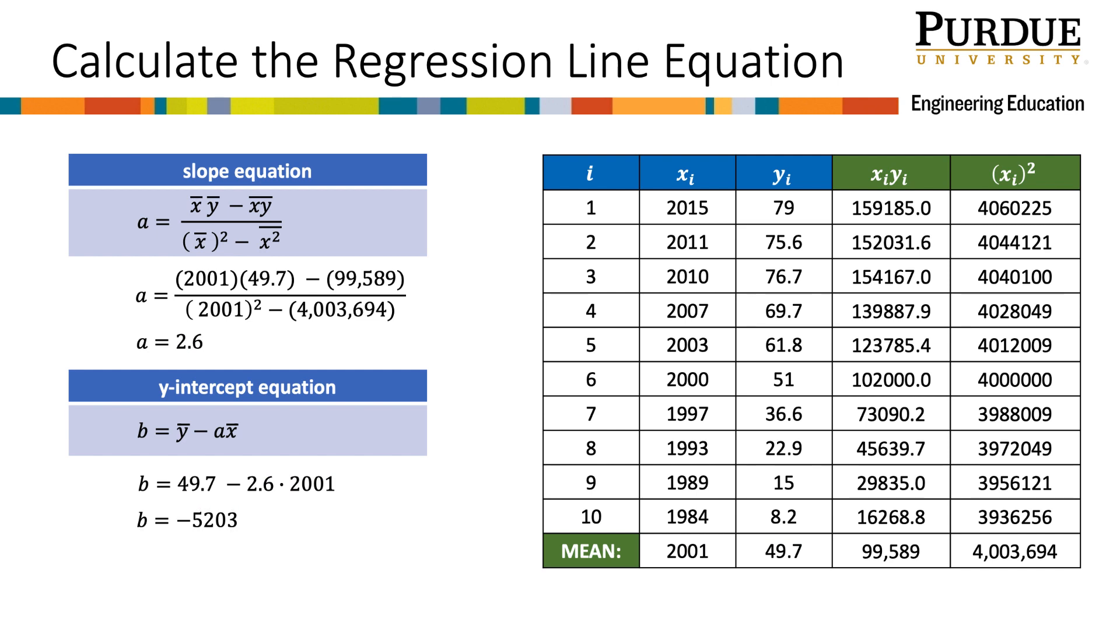Notice that our y-intercept value is negative 5,203. Remember that this is in percentage of households. So this has no meaning. It literally means the percentage of US households owning a computer more than 2,000 years ago, long before the invention of the computer and before the US was a country. This is another reminder that in spite of how clearly linear this model is during the period from 1984 to 2015, there is no guarantee that the relationship stays linear outside that range.